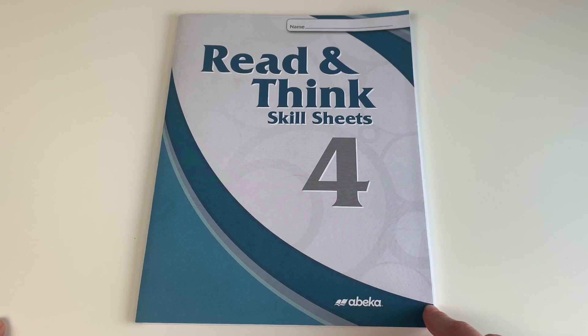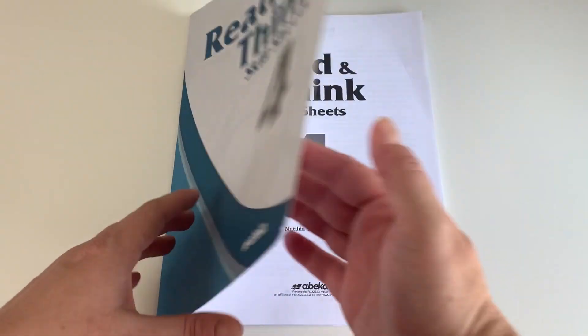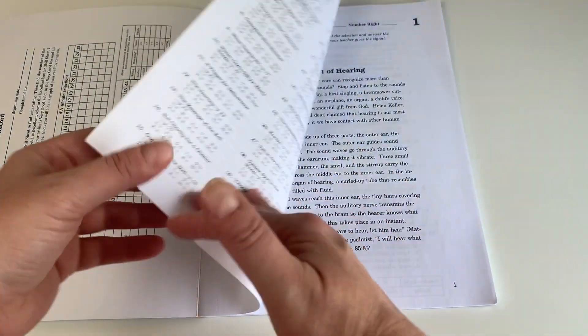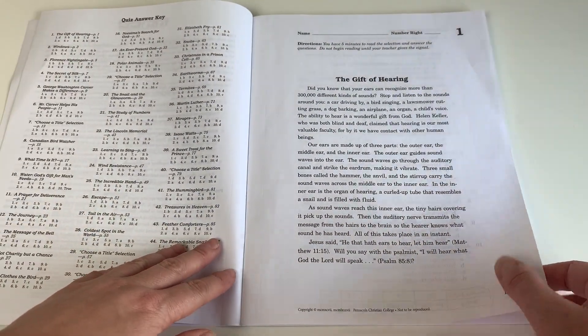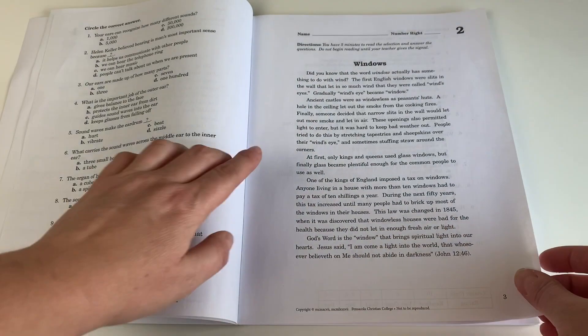Another thing we'll be using is the Read and Think Skills Sheets 4 by Becca. She'll be using this once or twice a week to work on reading comprehension skills, and what I like about this resource is it's very similar to what they might see on a standardized test.